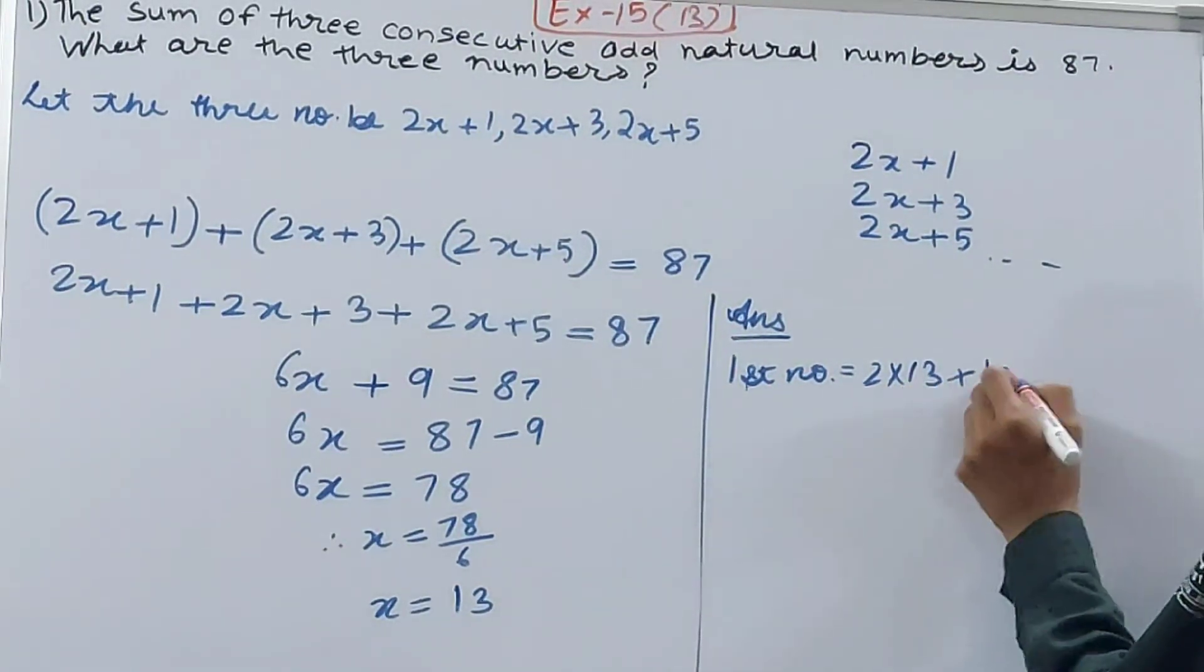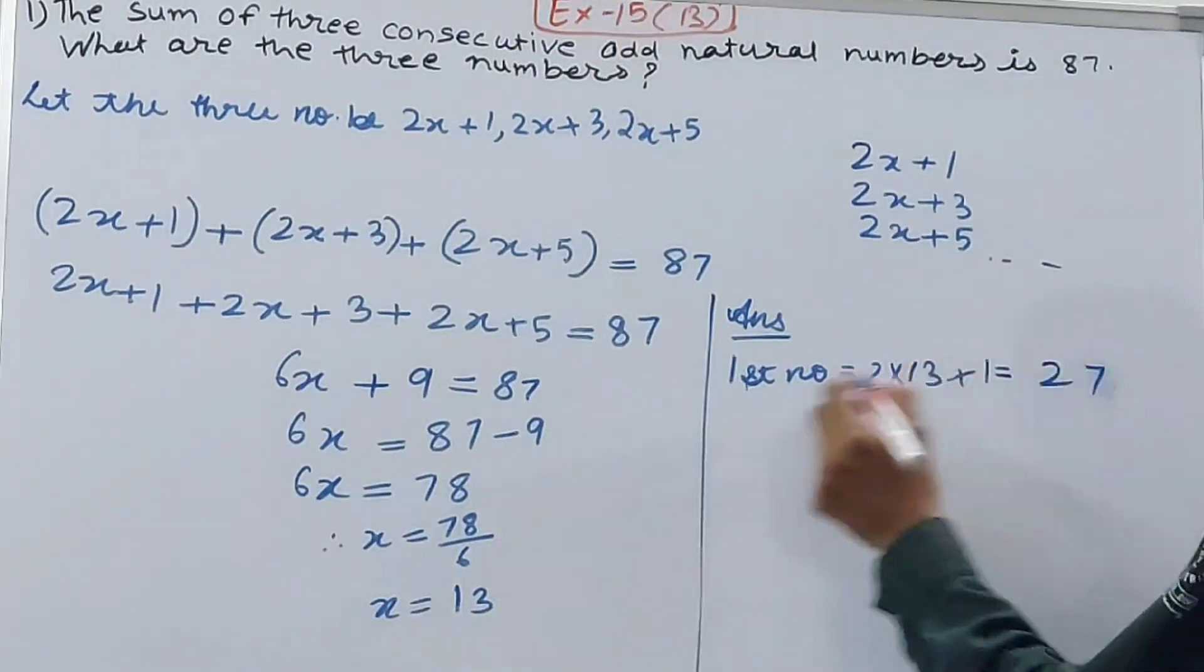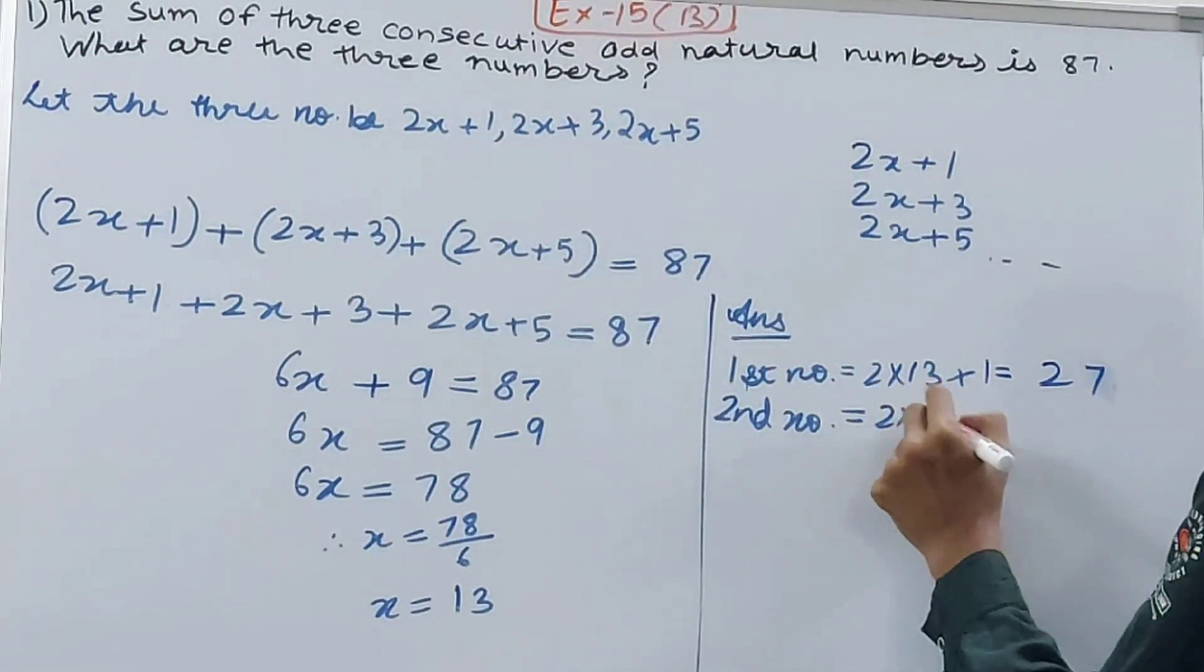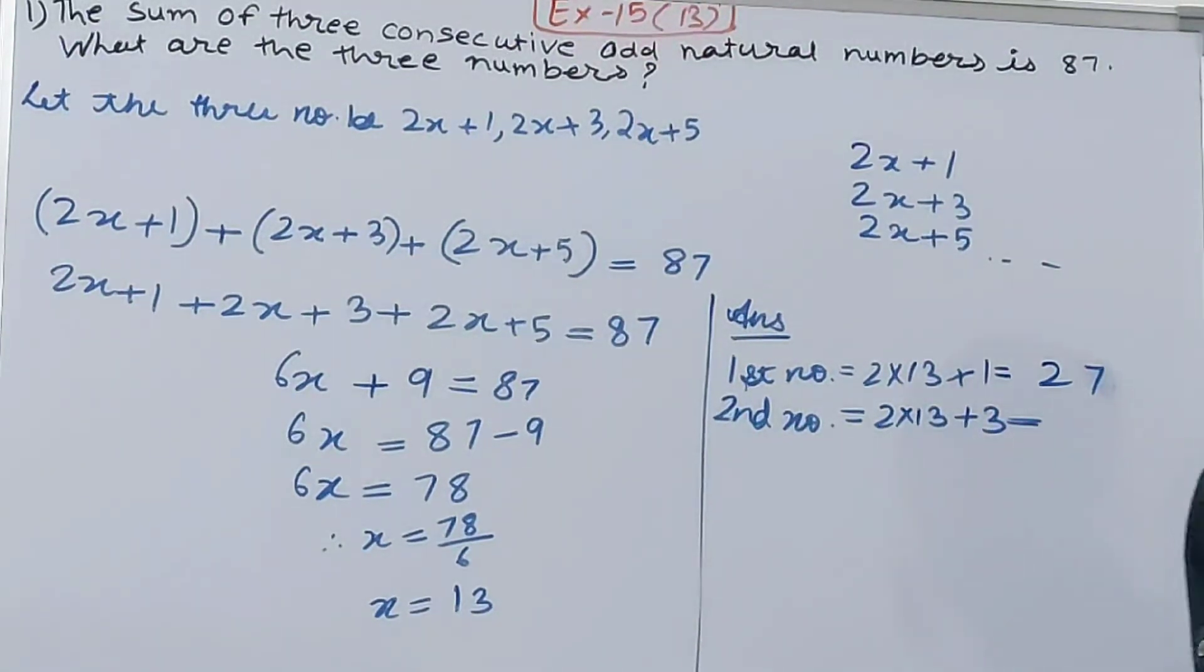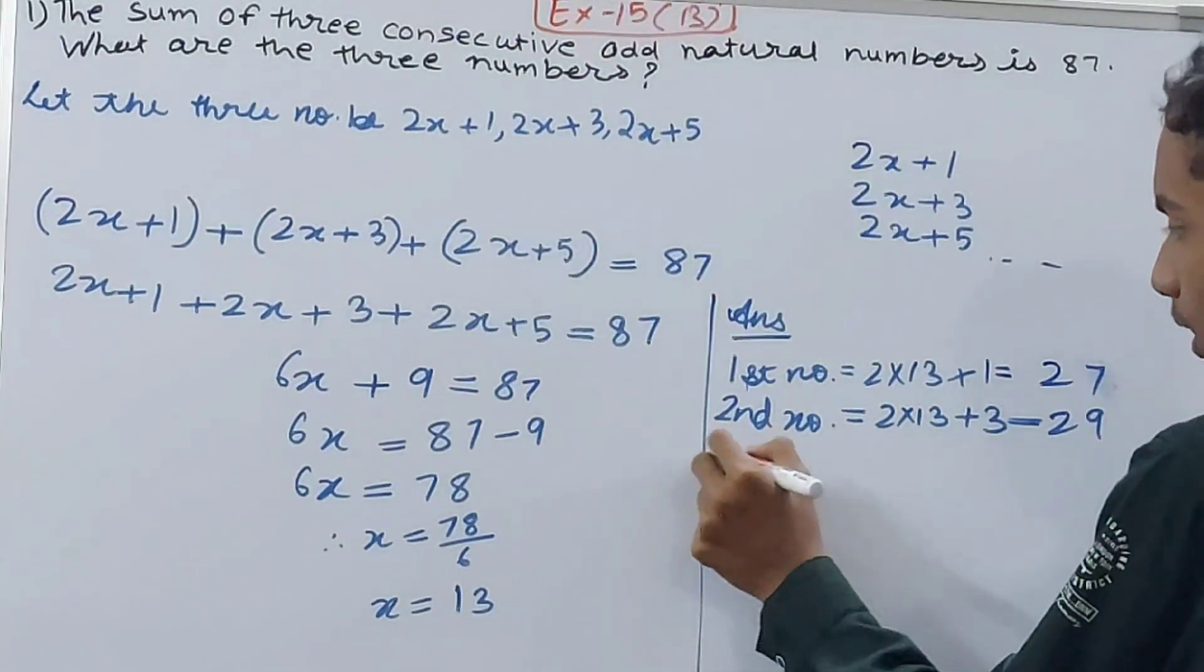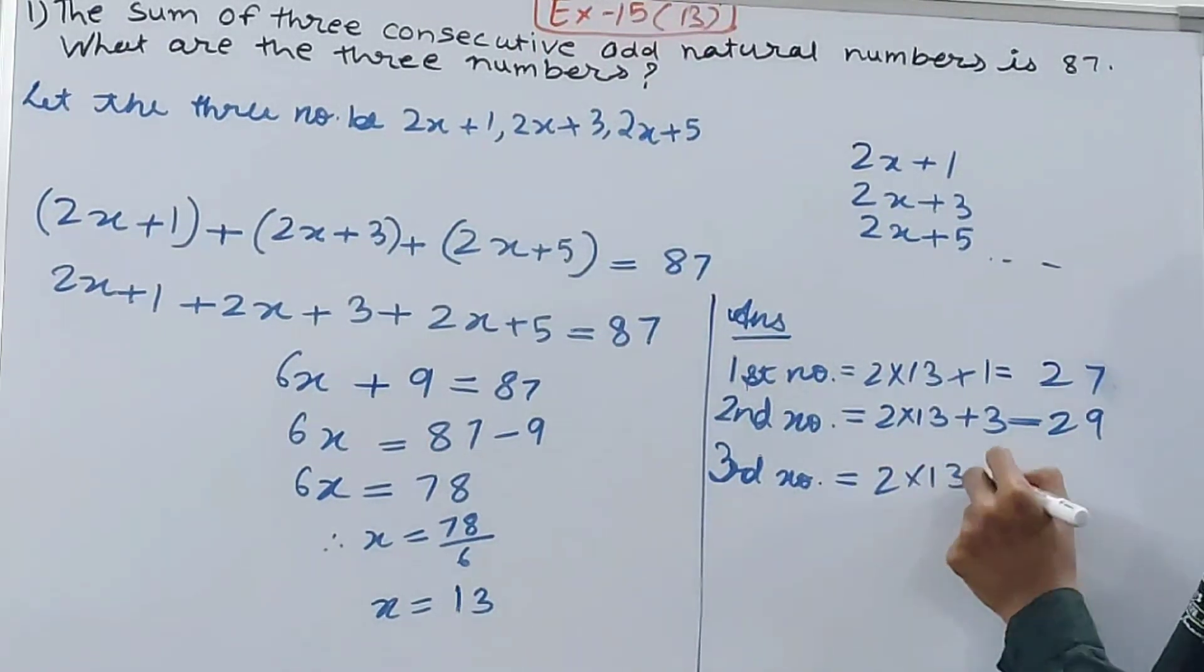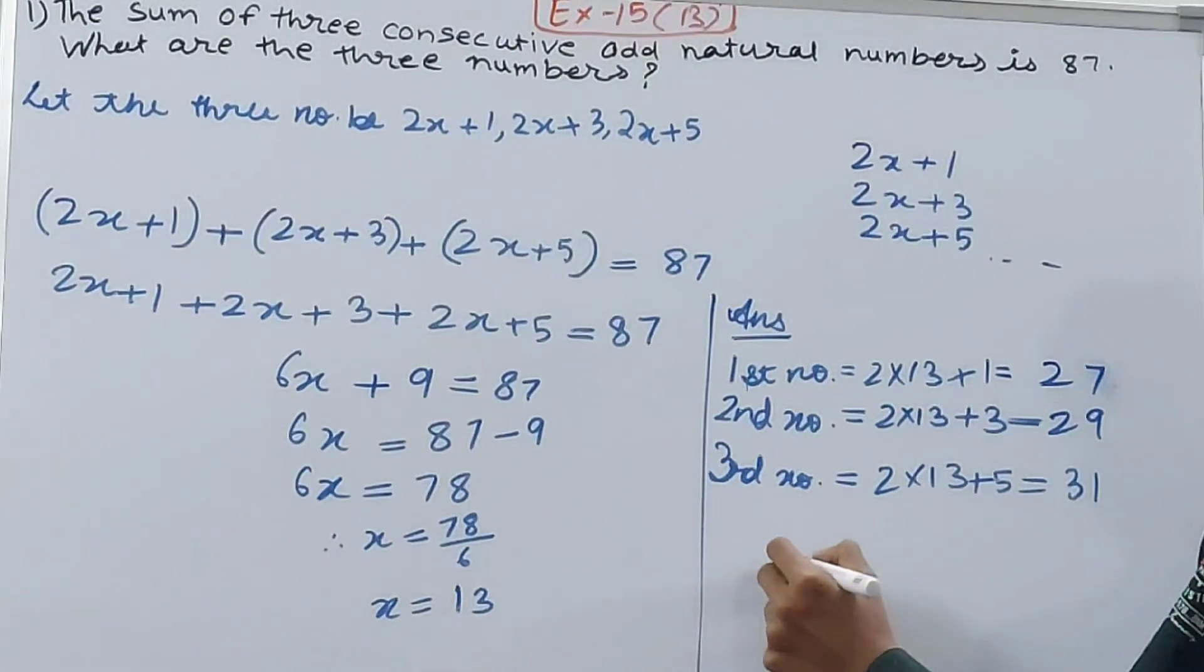Now second number, 2x+3, so 2×13 = 26 plus 3 is 29. Third number is 2x+5, so 2×13 + 5 = 26 + 5 which is 31. So the numbers are 27, 29, 31.